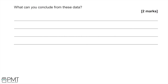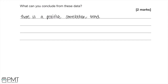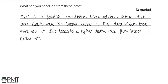What can you conclude from this data? Once plotted, the data points show a gradual positive correlation, with one or two anomalies. We can say there is a positive correlation between fat in diet and the death rate from breast cancer: more fat in diet leads to a higher death rate from breast cancer. Although there are a number of anomalies, the positive relationship is still clear.